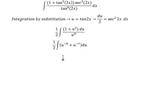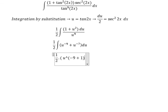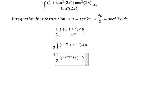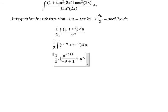Next, we can get the final answer. The integral of u to the power of negative 9 gives u to the power of negative 9 plus 1, over negative 9 plus 1. Similarly for u to the power of negative 7, we apply the same power rule.